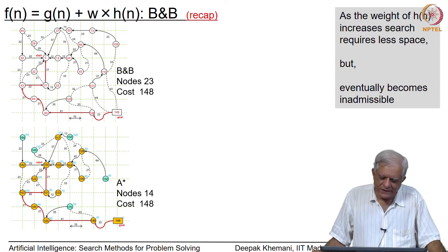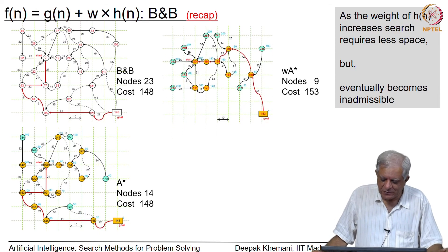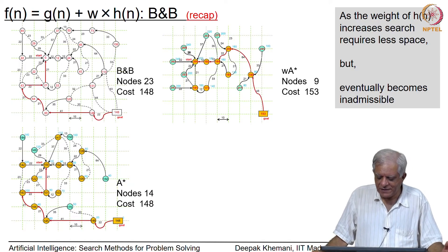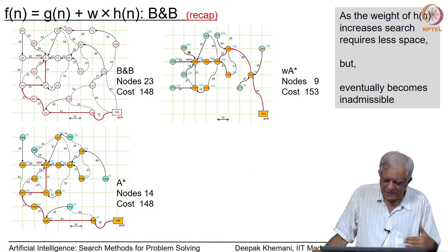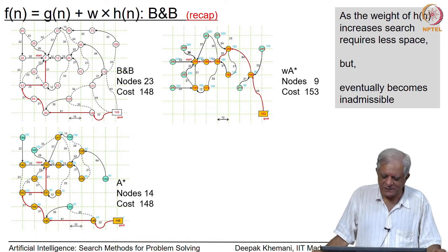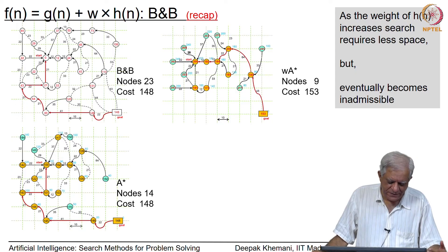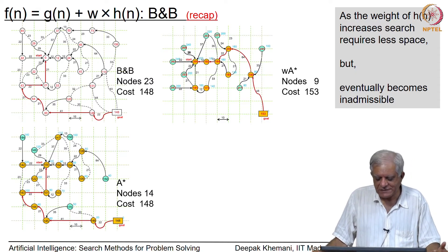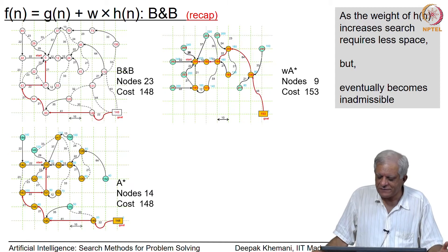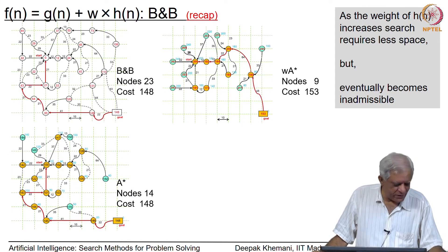When we increase the weight to 2, we get weighted A*. You can see that weighted A* explored a much smaller number of nodes — only 9 — but it found a more expensive path with a cost of 153. Weighted A* never ventured into the bottom-left half of the graph, whereas A* did explore a little bit of the top right but decided the bottom left was better. Weighted A*, being more influenced by the heuristic function, headed toward a path that seemed closer to the goal.